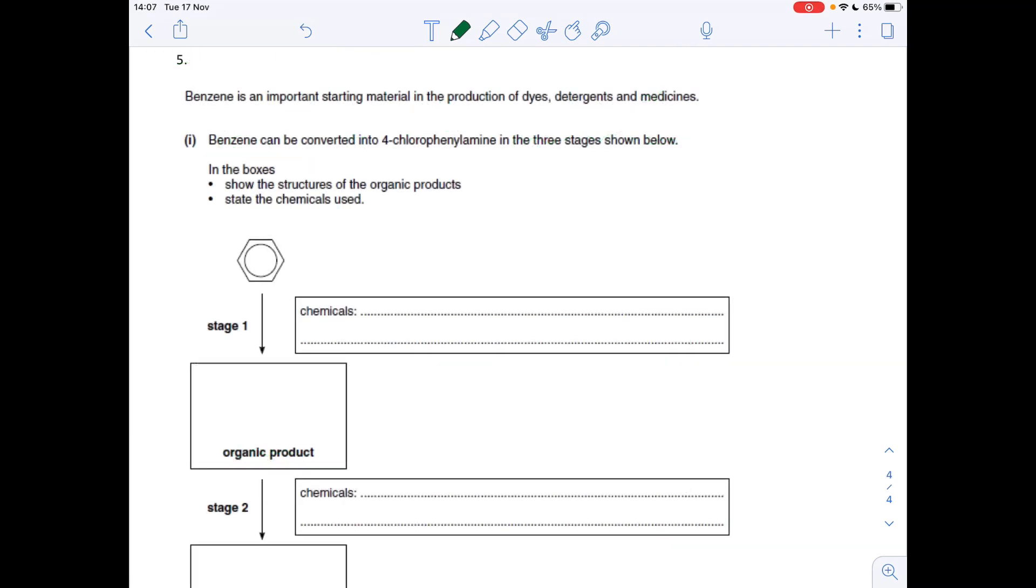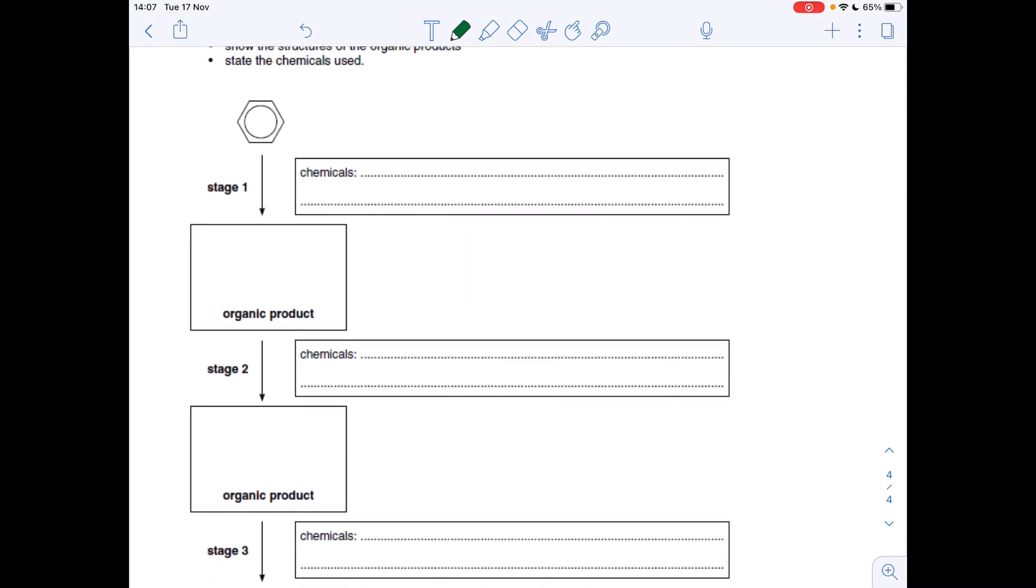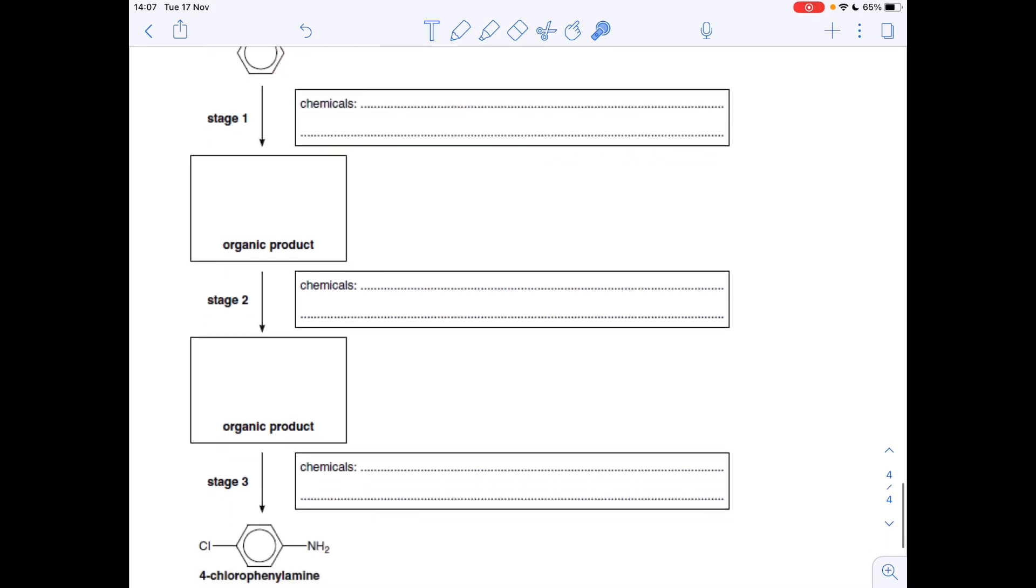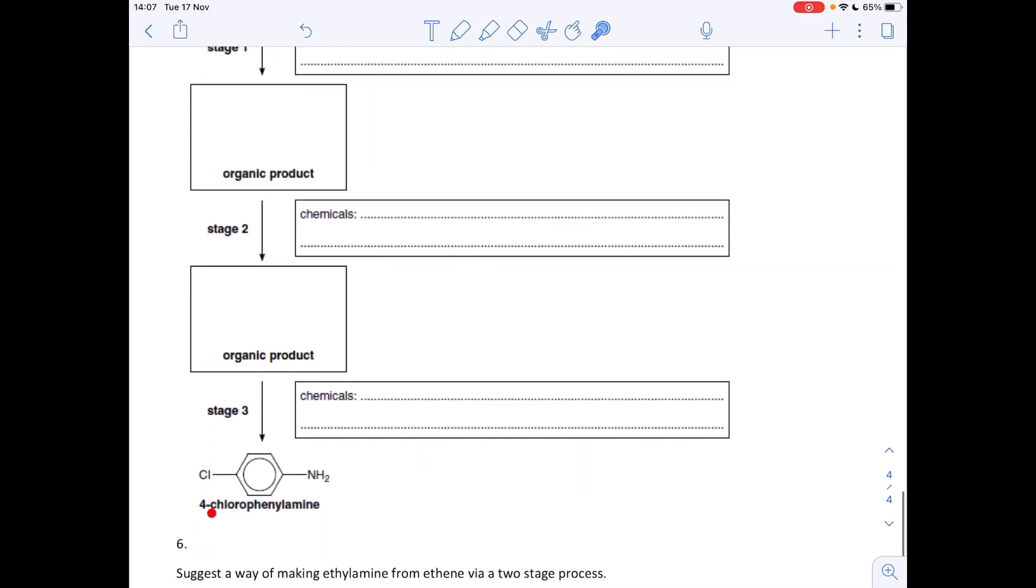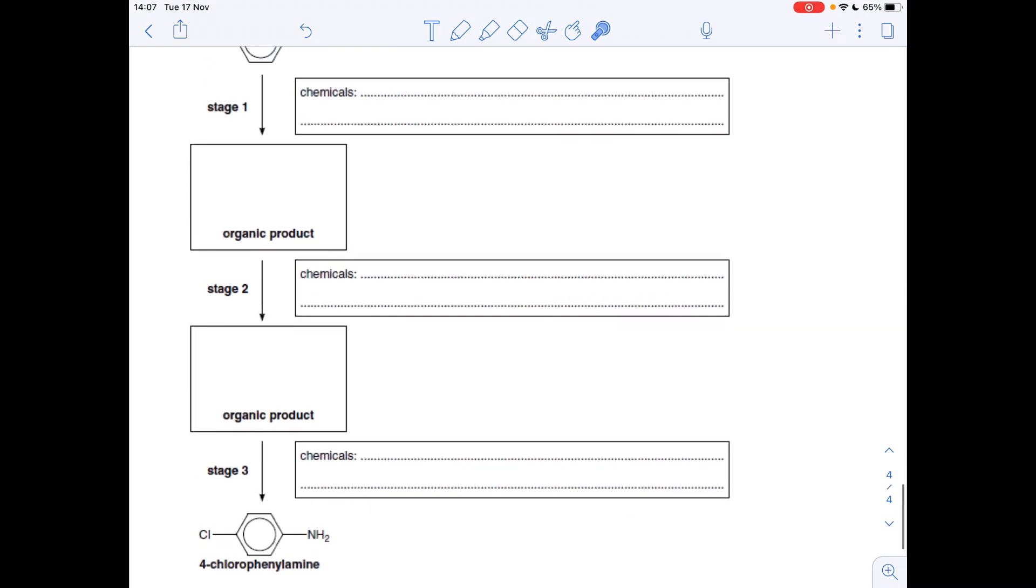Question five now, so we've got to complete the boxes for the chemicals and the organic products. Effectively, we're going from benzene through a couple of stages to 4-chlorophenyl amine. So we've got to be careful here that we do the steps in the right order, otherwise we're going to get the wrong product. So I'll give the right order first, and then I'll explain what the wrong order would lead to.